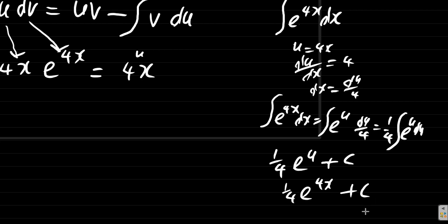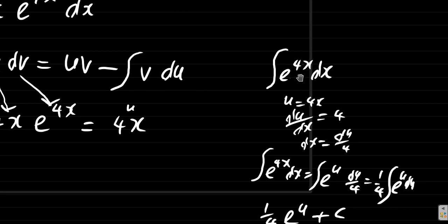Now here, as I said before, if you are practicing a lot you would be able to identify what the solution would be just by memory. It would be e to the 4x divided by 4, which is a quarter e to the 4x.